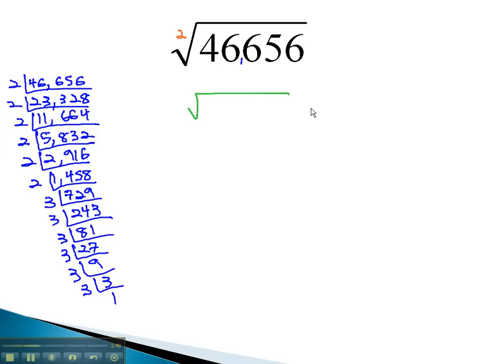We'll rewrite the square root now with its prime factorization of 2 to the 6th power times 3 to the 6th power.